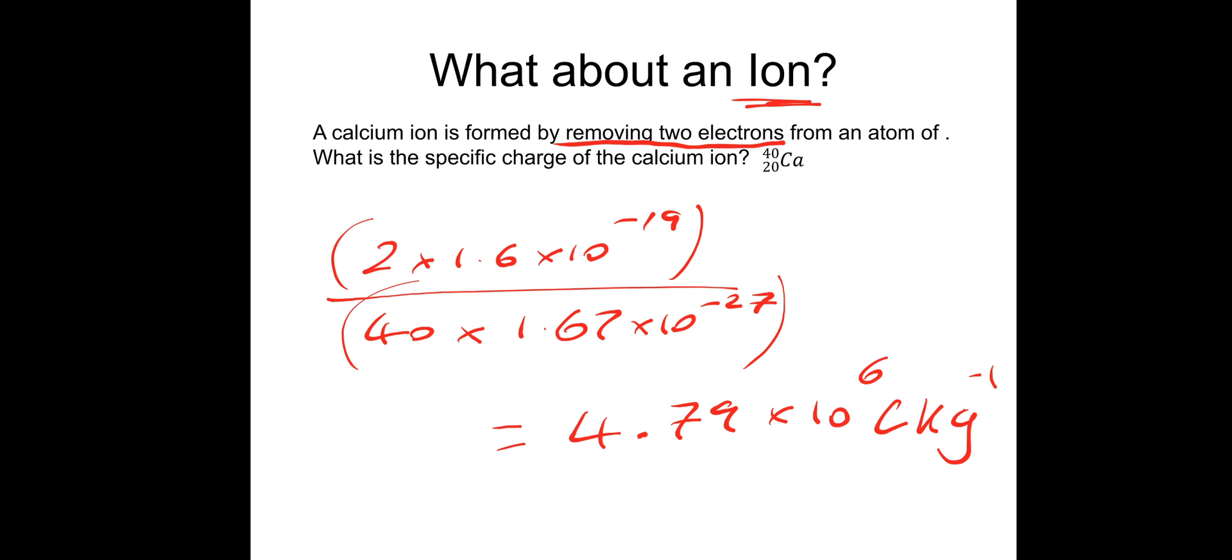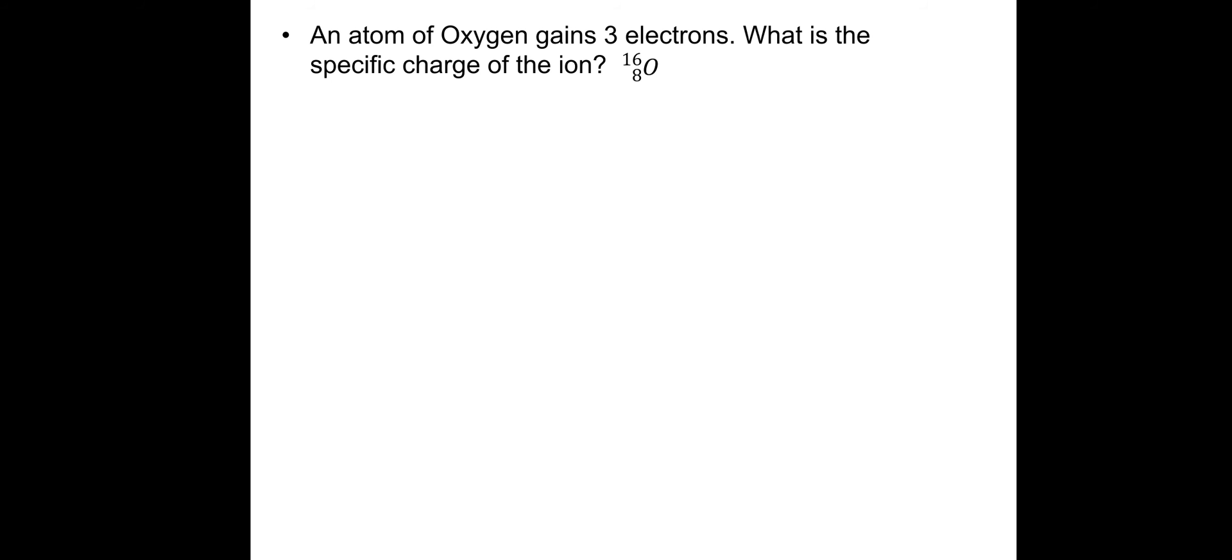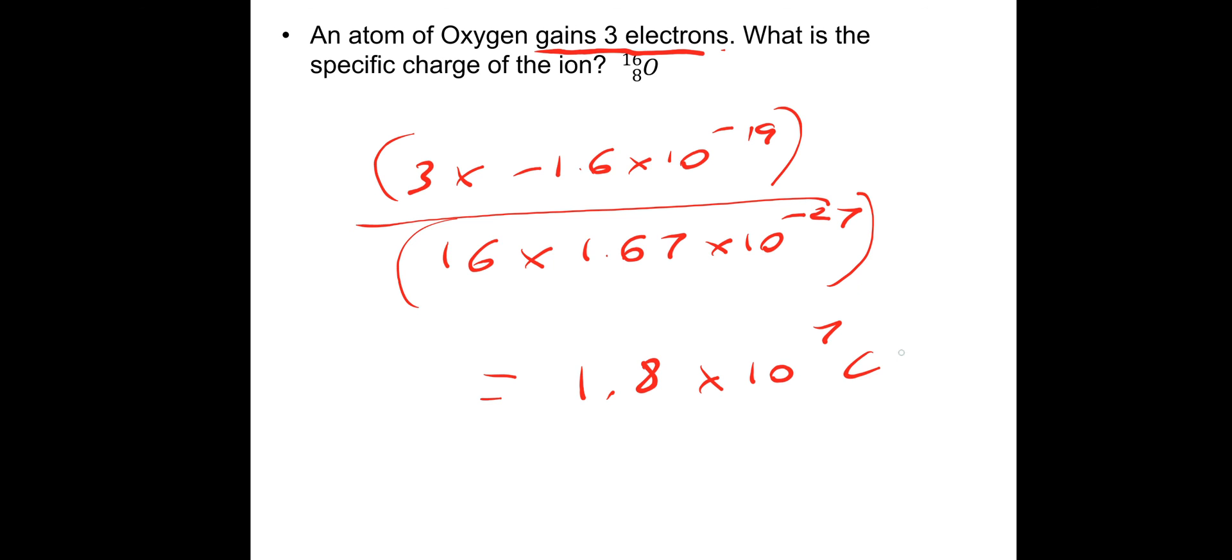So let's do another practice question. So an atom of oxygen gains three electrons. What is the specific charge of the ion. So have a go at this one, then I'll take you through the answer. So this time we've gained three electrons. So if we gain three electrons, the overall charge of this ion will be negative. So we need to do three times the charge of an electron. So that will be minus 1.6 times 10 to the minus 19. Divided by the mass of the ion, which is, so it's oxygen 16. So we have 16 multiplied by 1.67 times 10 to the minus 27. Put that in our calculator. So we get 1.8 times 10 to the 7 coulombs per kilogram.